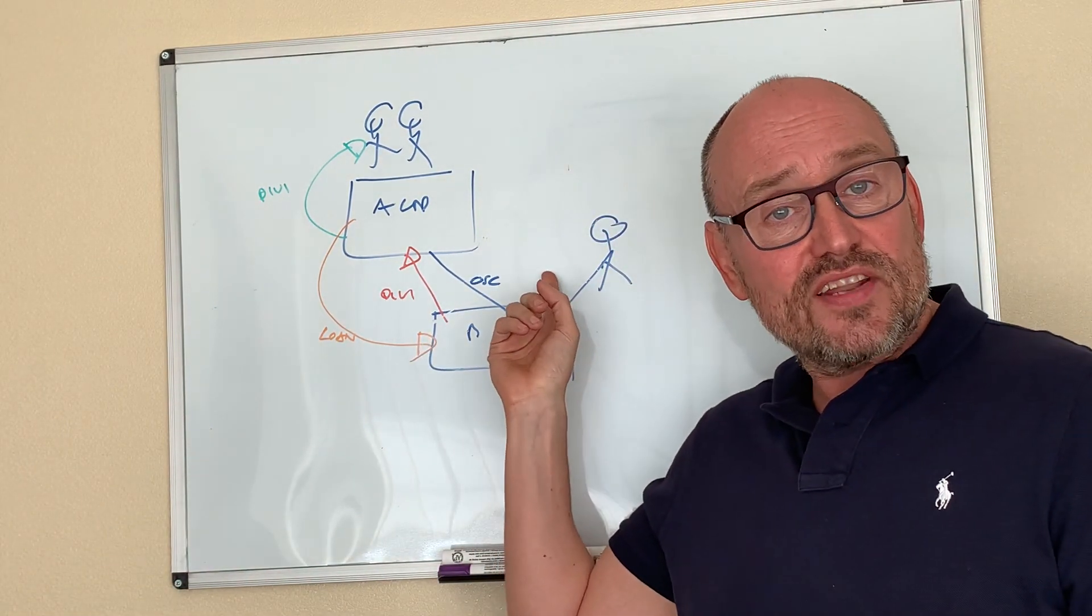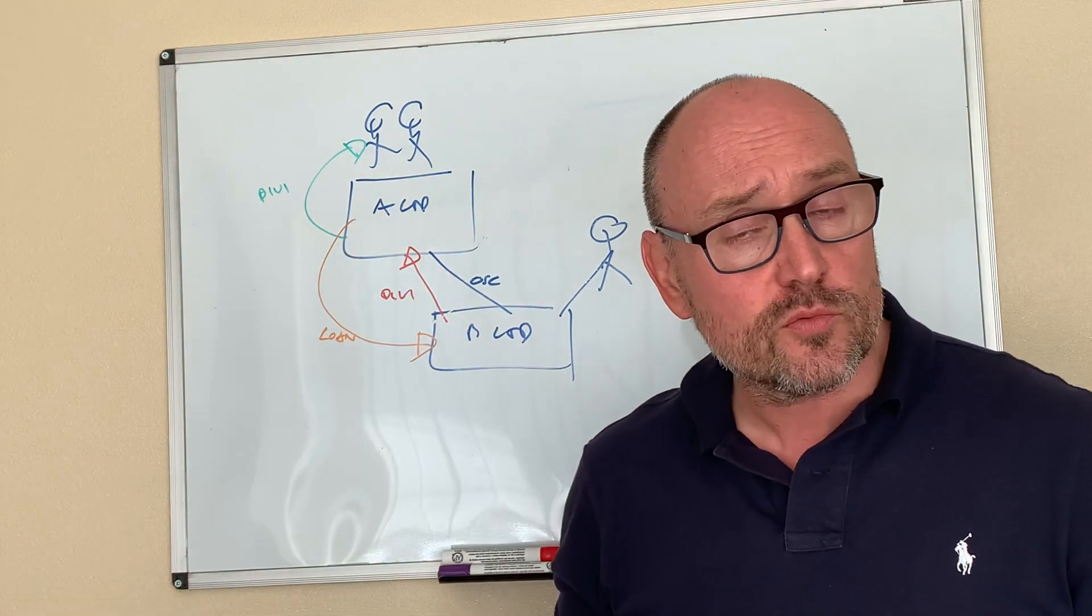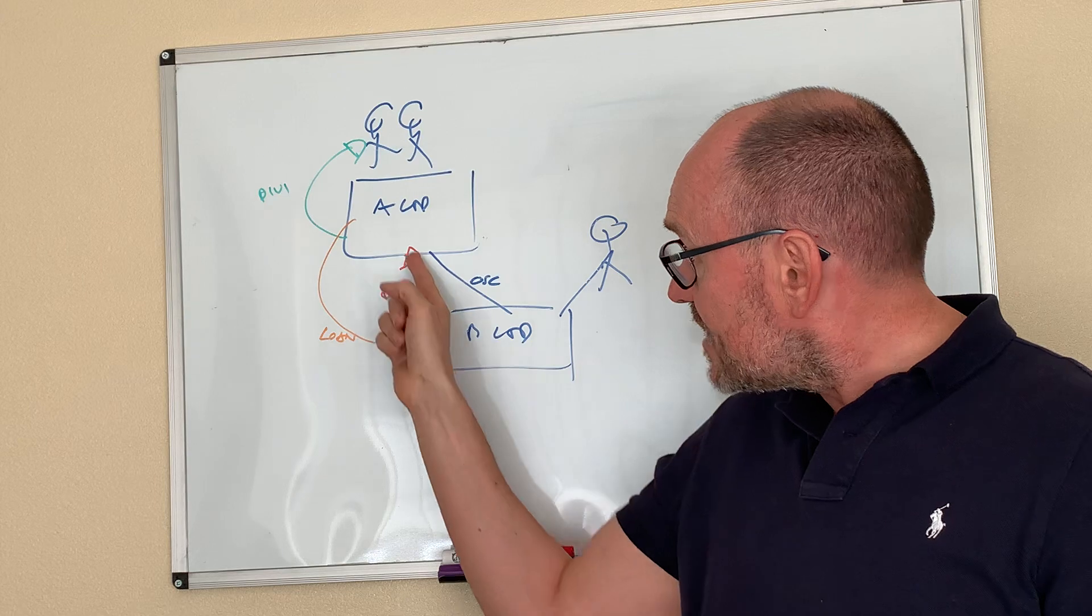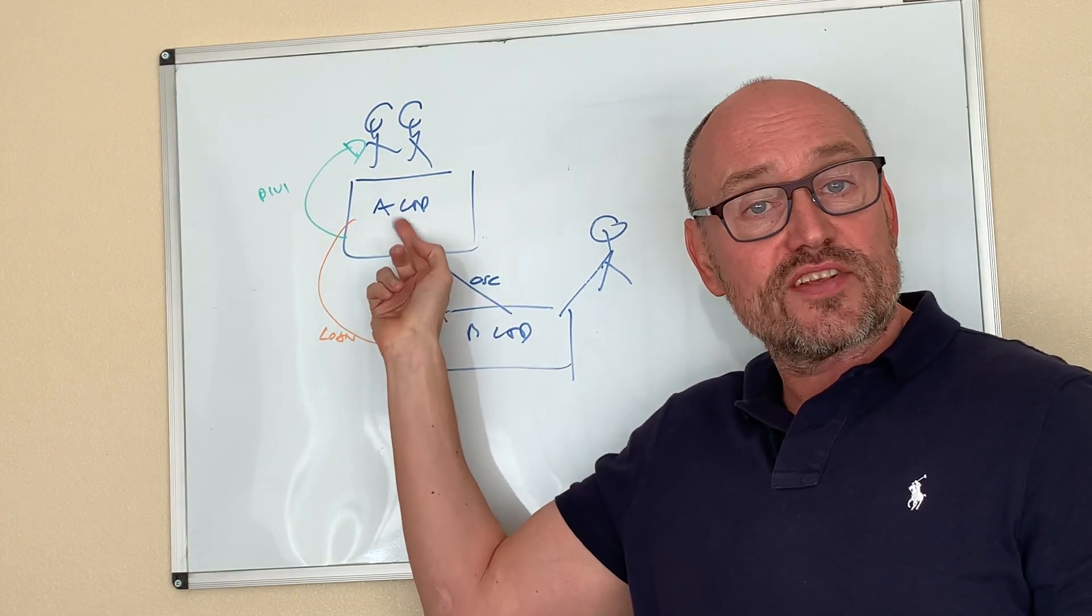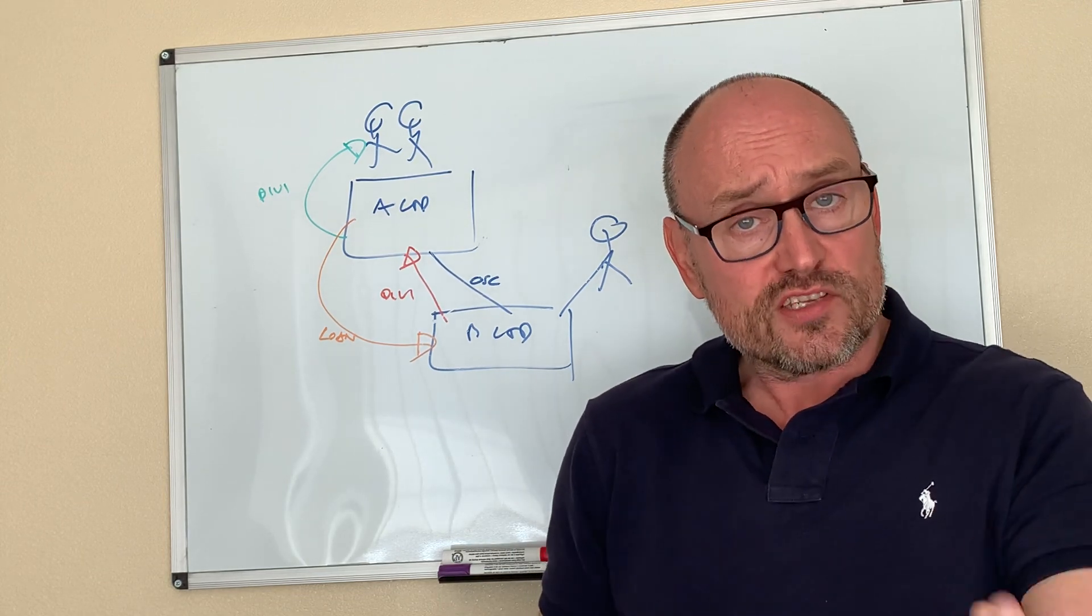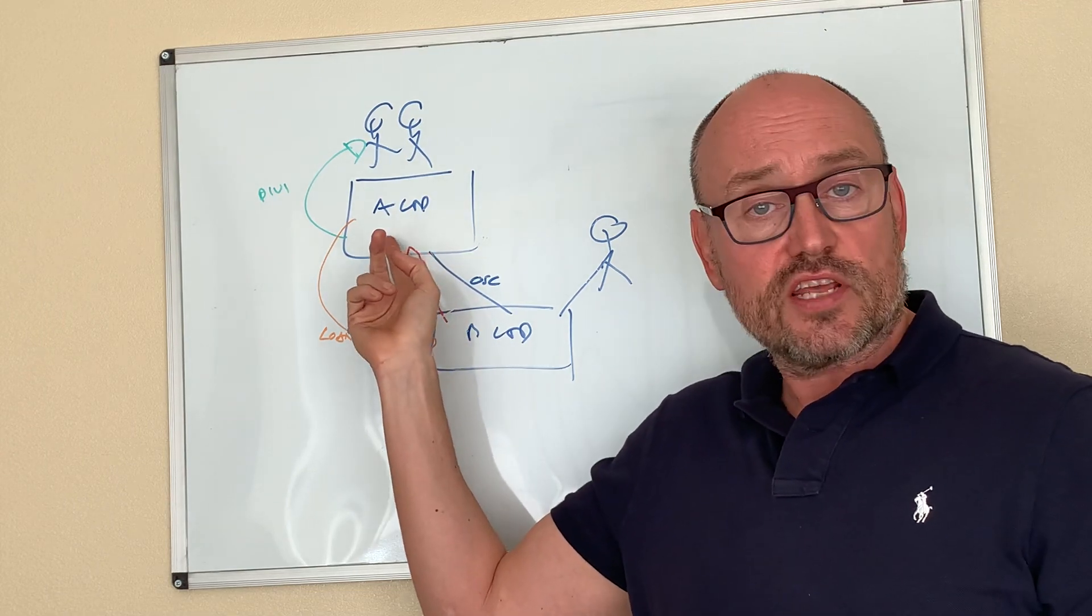This guy gets a dividend, taxable at that point but this company, A Limited, which is a corporate shareholder of B Limited, the dividend to it as a shareholder is tax-free if it stays in A Limited so it's a good way to do it for several reasons but that being one of them that the dividend from B Limited to A Limited is not taxable.